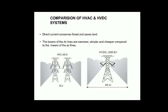Direct current also conserves forest and saves land. The towers of DC lines are narrower, simpler, and cheaper compared to towers of AC lines. As seen in both pictures, HVAC is on the left and HVDC is on the right, and HVDC clearly needs narrower and simpler towers.